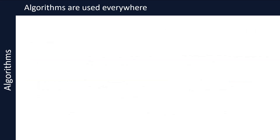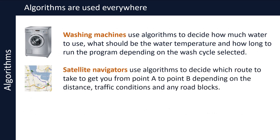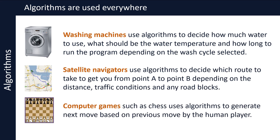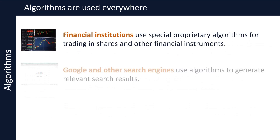Algorithms are used everywhere. A few examples are: washing machines use algorithms to decide how much water to use, what the water temperature should be, and how long to run the program depending on the wash cycle selected. Satellite navigators use algorithms to decide which route to take from point A to point B depending on distance, traffic conditions, and any roadblocks. Computer games such as chess use algorithms to generate the next move based on the previous move by the human player. Financial institutions use special proprietary algorithms for trading in shares and other financial instruments. Google and other search engines use algorithms to generate relevant search results.